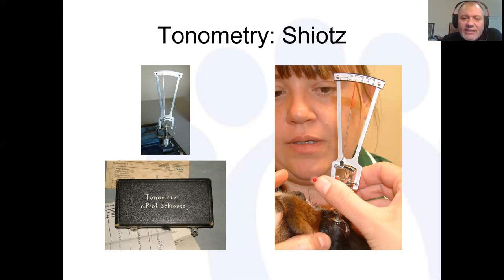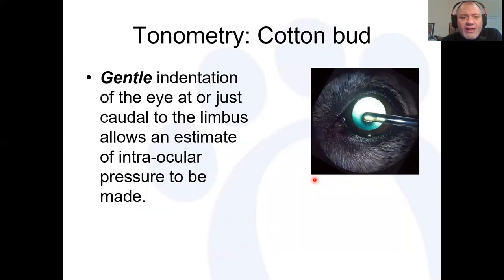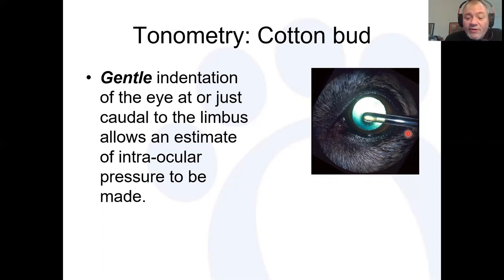The Schiotz tonometer is very useful if you have no access to electronic tonometry — it costs less than £100 and can give accurate results, though it requires some practice. Use preservative-free hyaluronate such as Clinitas, plus local anesthetic, and hold the patient gently with the eye horizontal. For cotton bud indentation, apply it at the limbus on the scleral side — not the cornea — to gently assess globe firmness. Comparing both eyes when a patient is anaesthetized can be a useful tip.